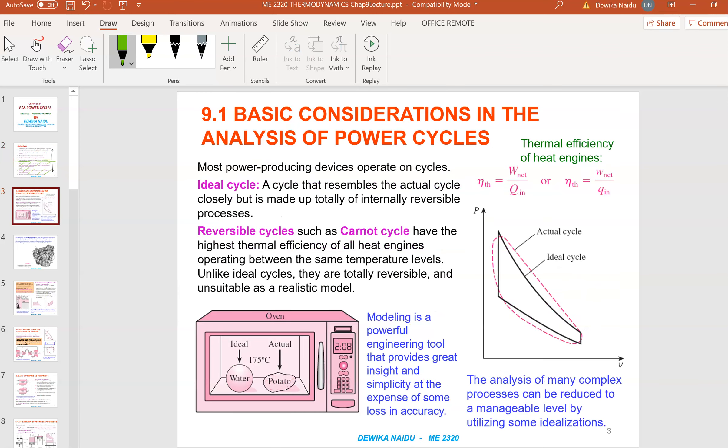Basic consideration in the analysis of a power cycle. Most power producing devices operate in cycle. What does it mean by cycle? Starts and ends at the same point. Ideal cycle resembles the actual cycle closely but it is made up totally of internally reversible process.